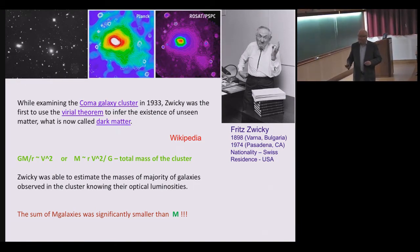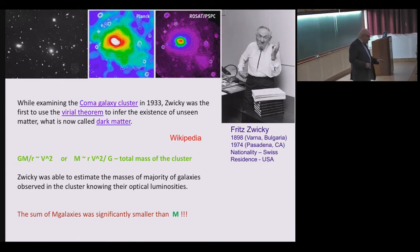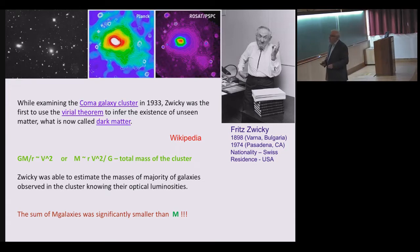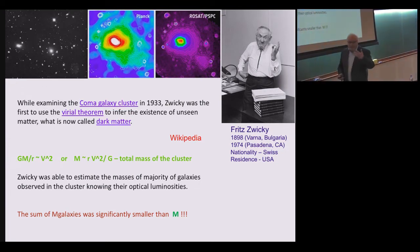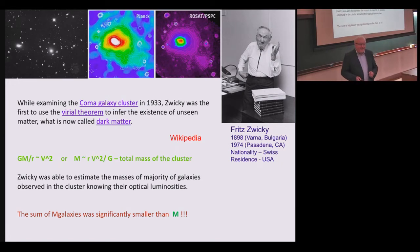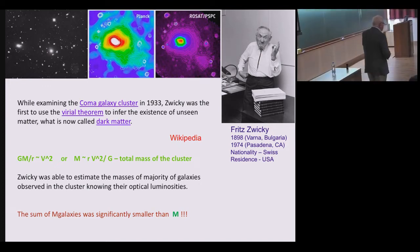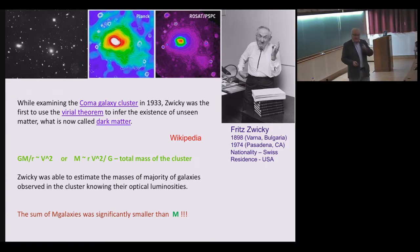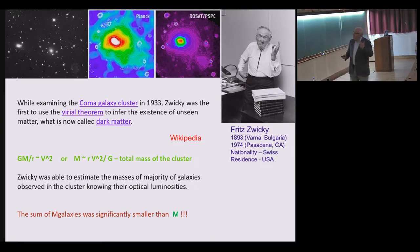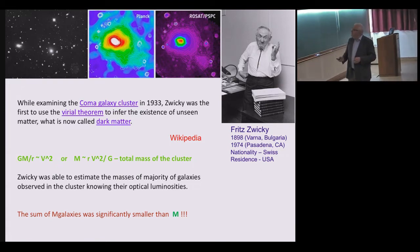Zwicky was able to estimate the masses of individual galaxies. The sum of galaxies was significantly 30 or 40 times less than the necessary mass to keep galaxies together. He wrote this, and everybody was silent. From 1933 to the 1980s, maybe many tens or even hundreds of astronomers tried to repeat this exercise. Everybody was getting the same result, but because it was obviously wrong, everybody was silent.